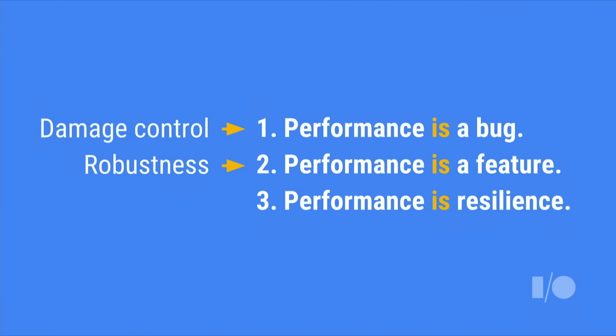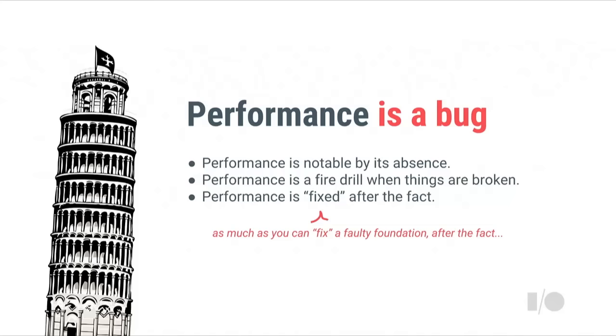The first stage is "performance is a bug" — they reach out to me because they previously didn't care about it, but something happened that made it such a big issue that now it's: OK, let's fix it. That's damage control. The second stage is they internalize that performance is a feature, just like anything else, so they start adding robustness to the app. And then the third stage — which I'm hoping to convince you of today — is thinking about resilience, and what you have to do to get there.